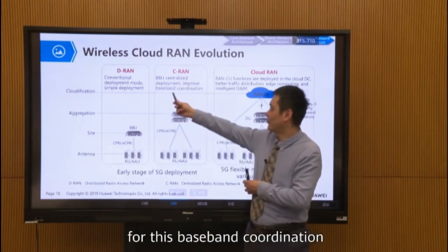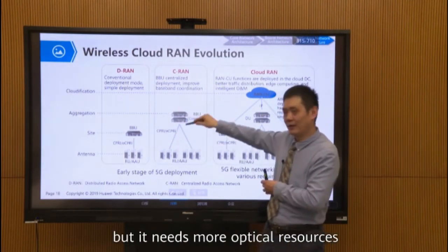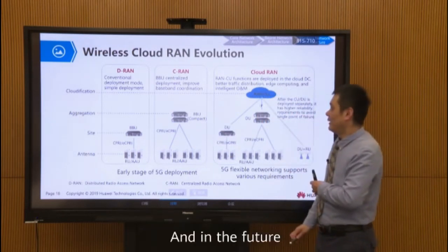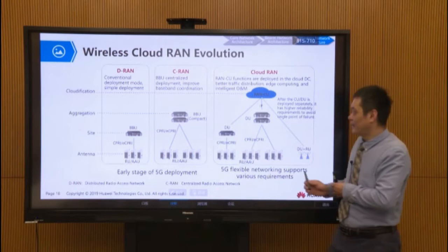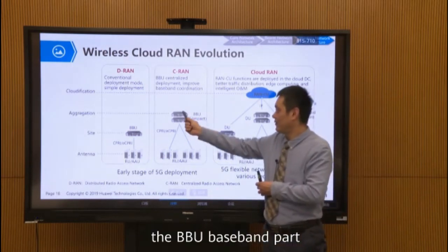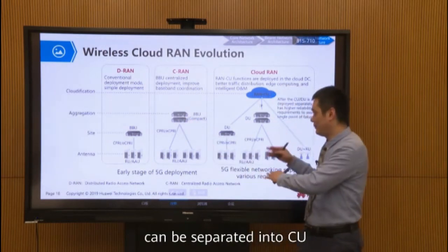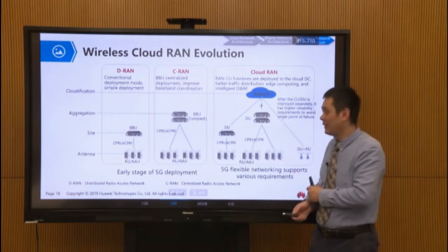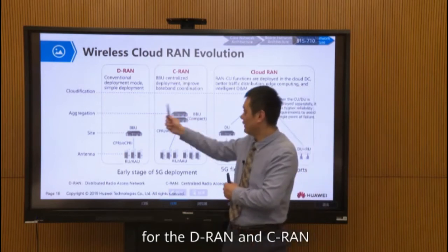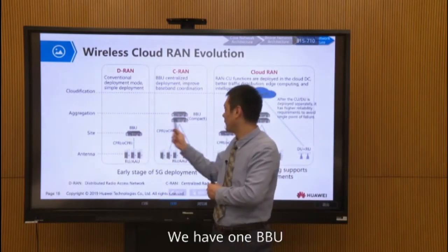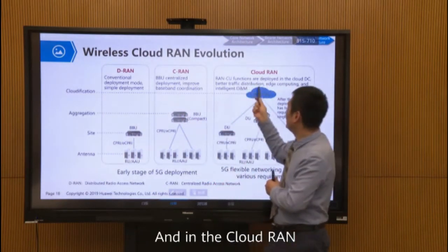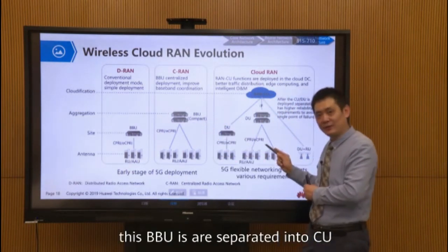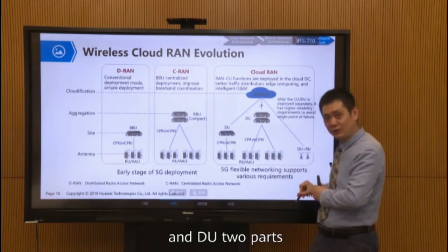In the future, the BBU baseband part can be separated into CU and DU — two parts. For both DRAM and CRAM, we have one BBU, but in Cloud RAN, this BBU is separated into a CU and a DU.